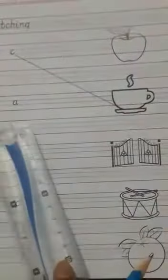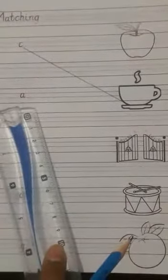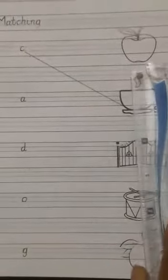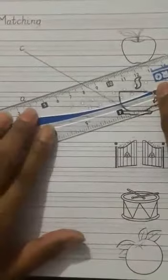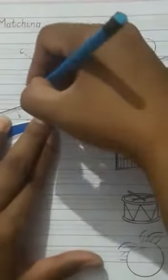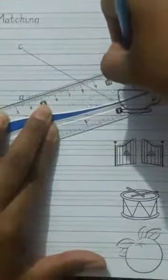Our next sound is A. Apple. Yes. Set the ruler, girls, and match A with apple.